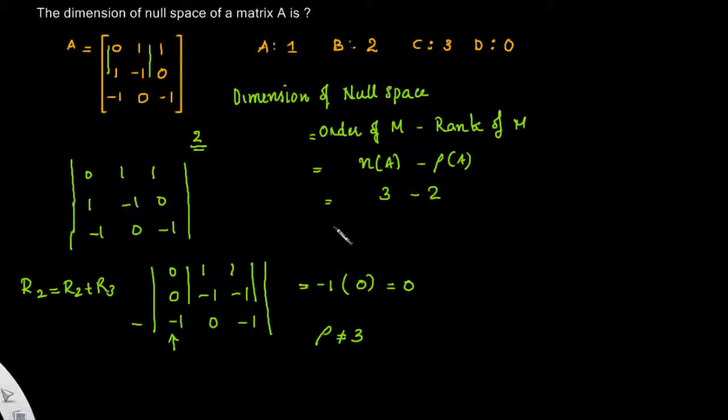That will be 2, so the nullity is 1. So the correct option is option A.